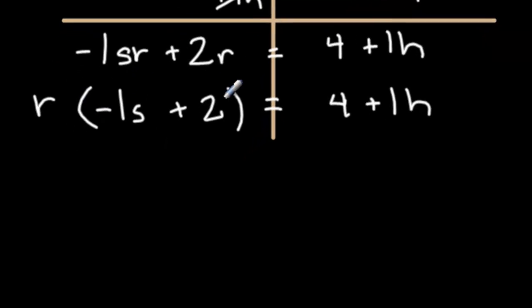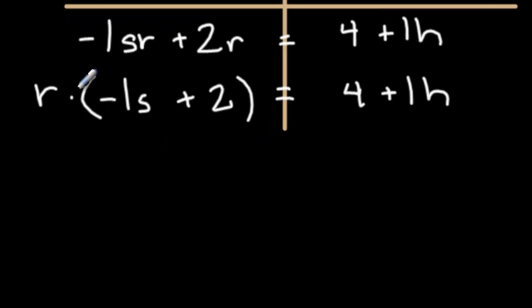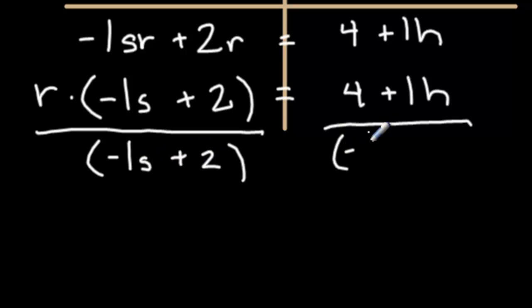You can even divide by multiple terms as long as they're in parentheses. So to get rid of this negative 1s plus 2, since it's being multiplied, you can divide by negative 1s plus 2 to both sides.